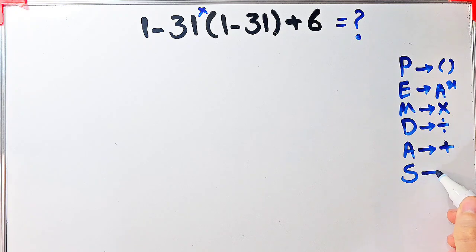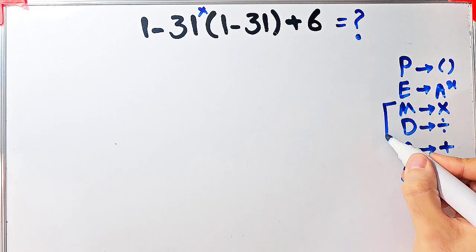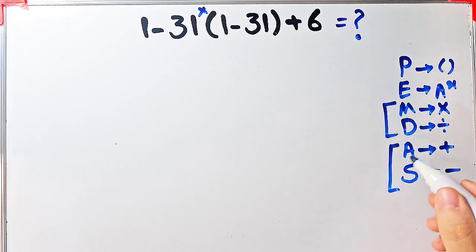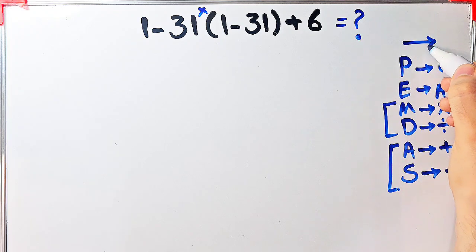Multiplication and division have the same level of priority. Also, addition and subtraction have the same level of priority. When we have both in an expression, we start from the left and simplify the question.